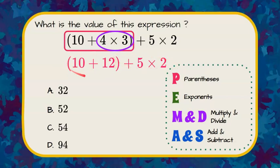Now we have to finish evaluating within the parentheses. The only thing left to do inside the parentheses is to add. 10 plus 12 is 22, rewriting our numerical expression. Now we've cleared the parentheses.